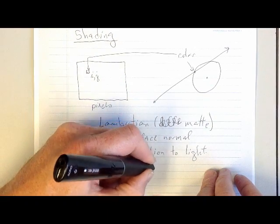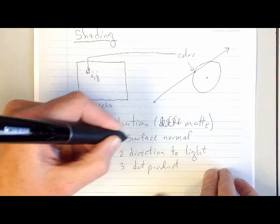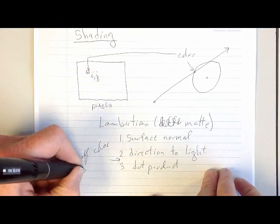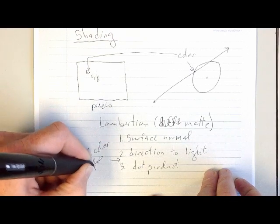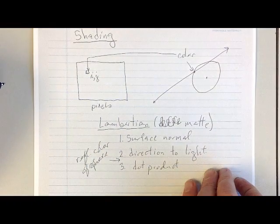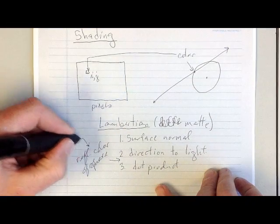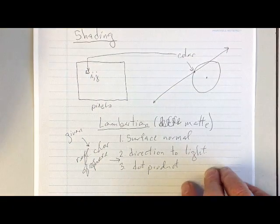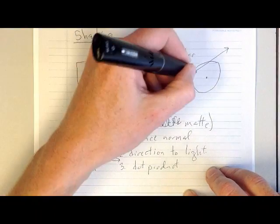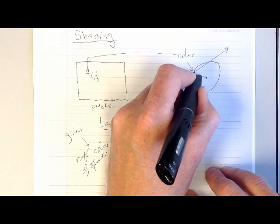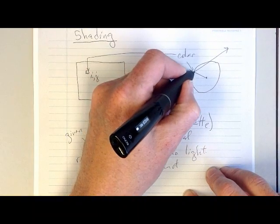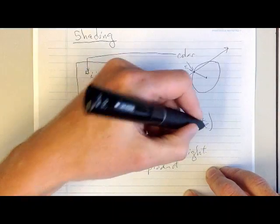One thing we need to know is the surface normal at that point. The other thing we need to know is the direction to the light. And then once we've got those two things, we just do a dot product. We also need to know the reflective color of the sphere, so that you can plug that into the equation for Lambertian shading.